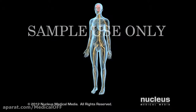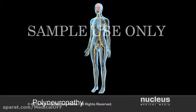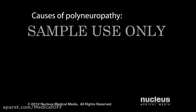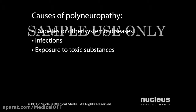Involvement of multiple nerves, called polyneuropathy, is far more common. Damage typically begins in the nerves farthest from the central nervous system and progresses symmetrically. Polyneuropathy can be caused by diabetes and other systemic diseases, infections, or exposure to toxic substances.